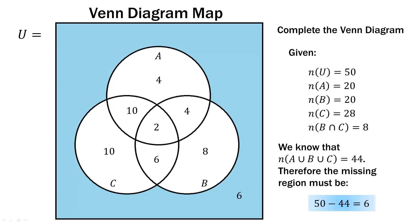So before we do the second one, just some general things to keep in mind. The easiest thing to do is just make a list — make a list of everything you're given, and then make a list of everything you can find out from the diagram on your own. And then from there, it's just basically solving a puzzle. Find the easy things first — things where you have everything in a set except one piece — and then work from there.